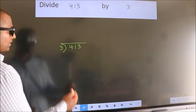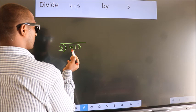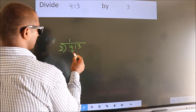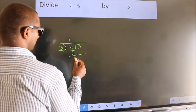Next. Here we have 4, here 3. A number close to 4 in 3 table is 3 1s 3. Now we should subtract. We get 1.